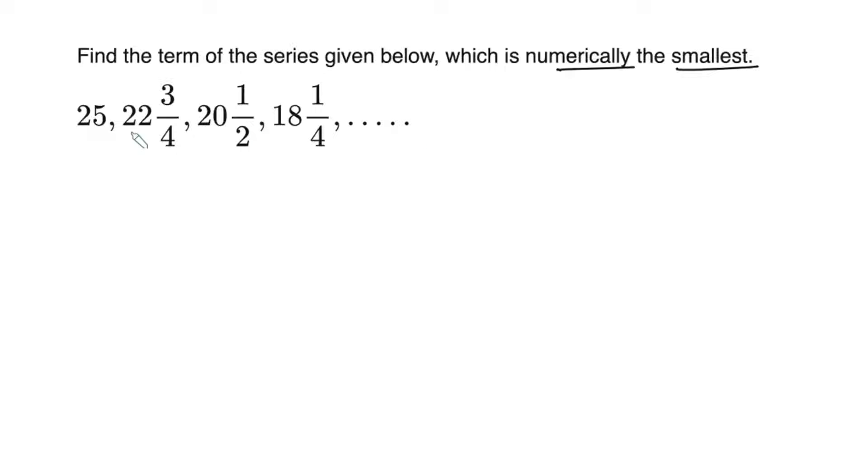We can easily prove that this sequence is an AP, with the first term equals 25, and the common difference which can be found by subtracting the second term and the first term.